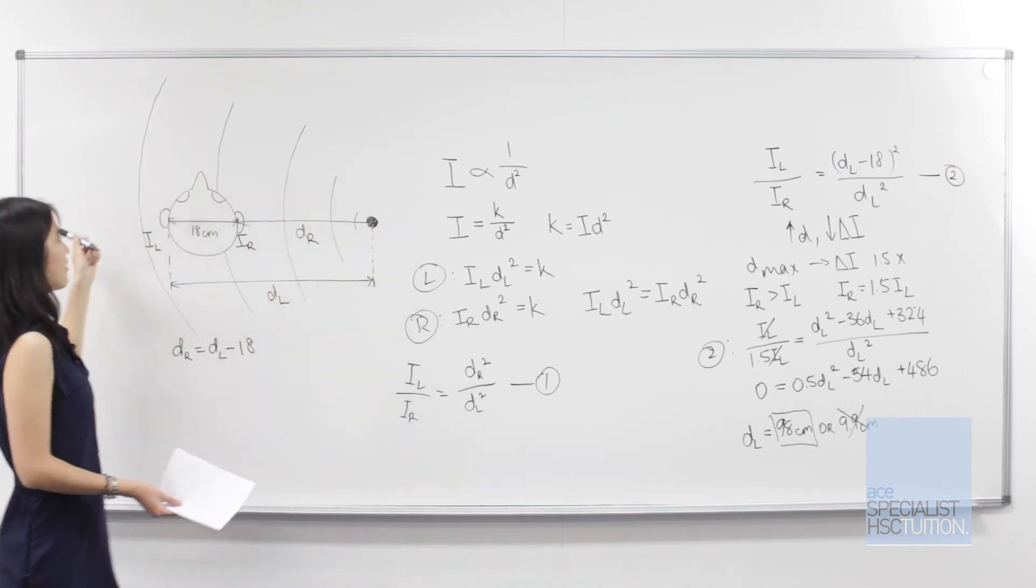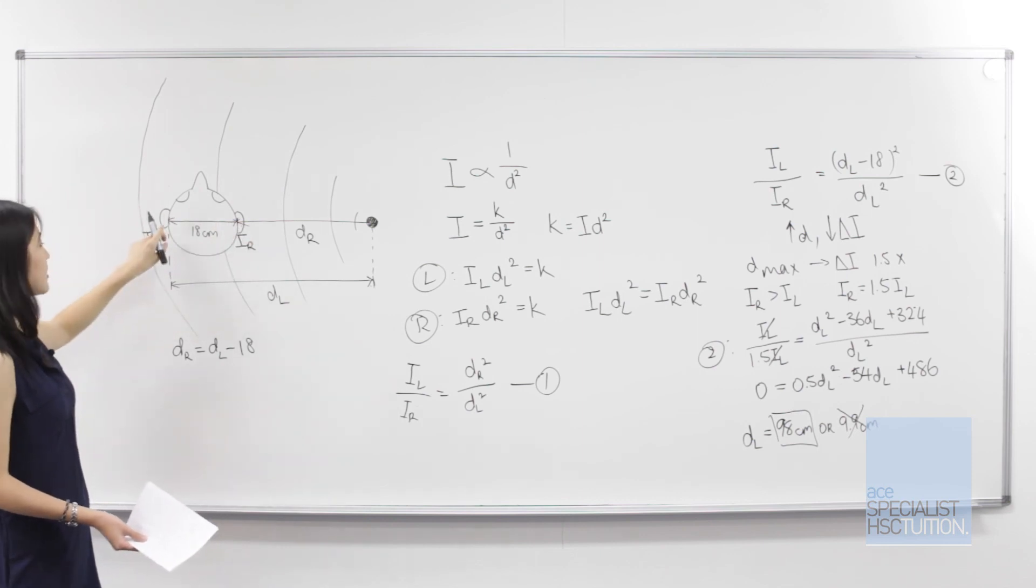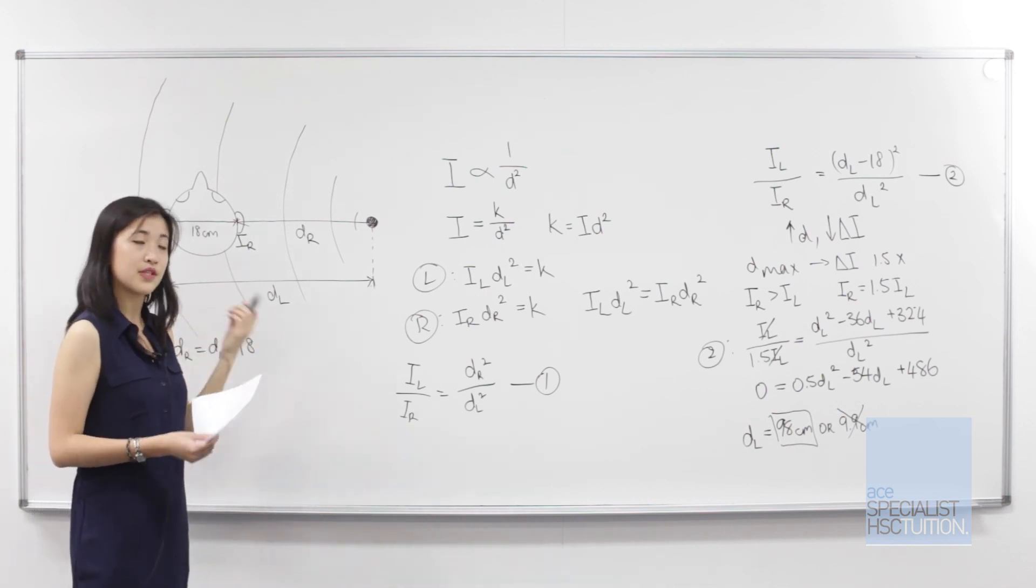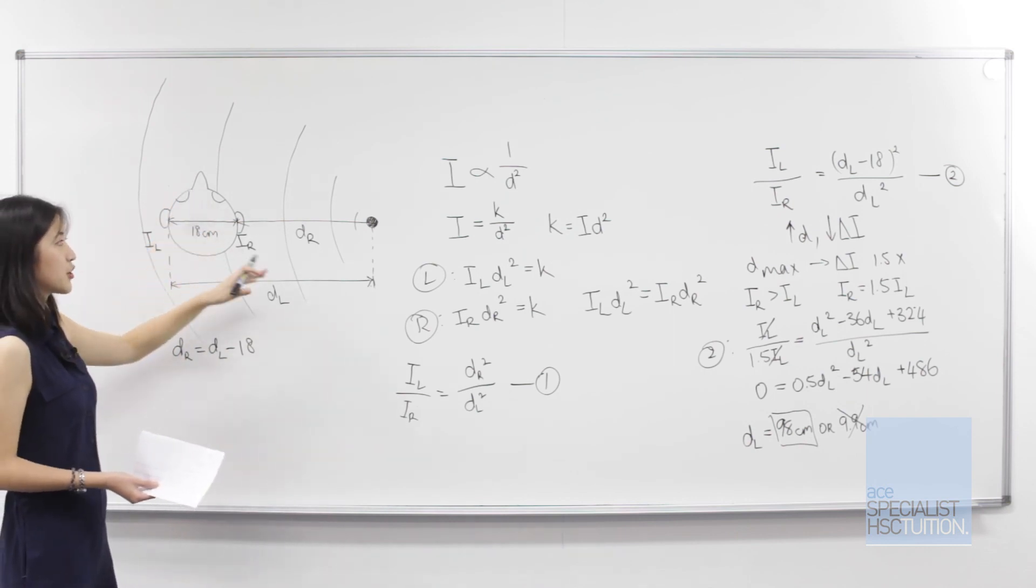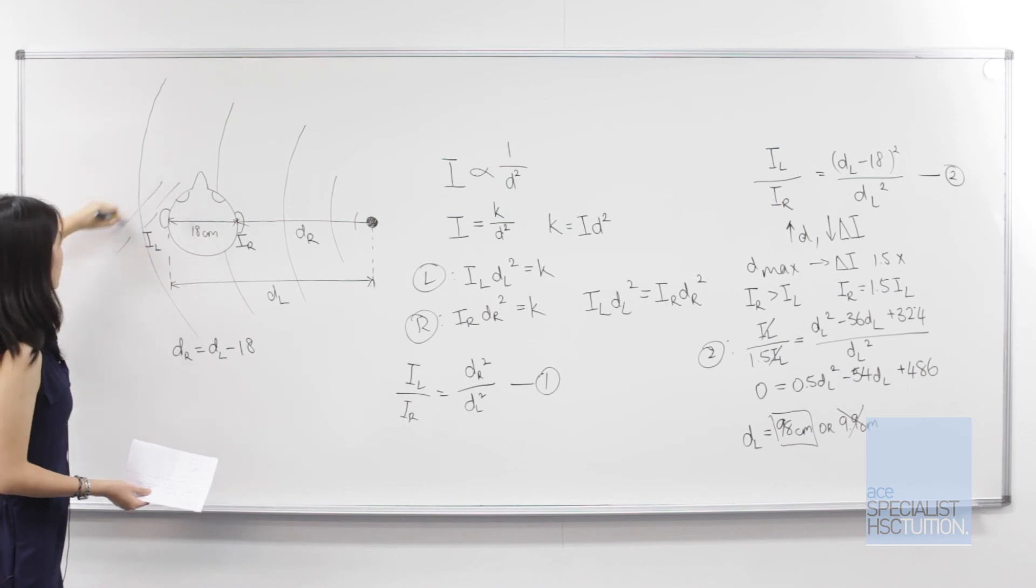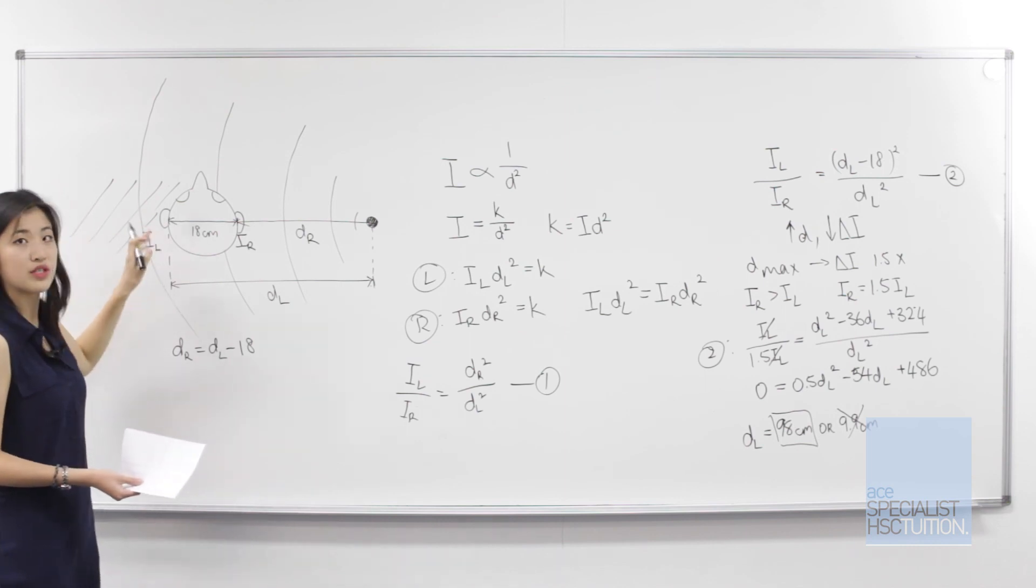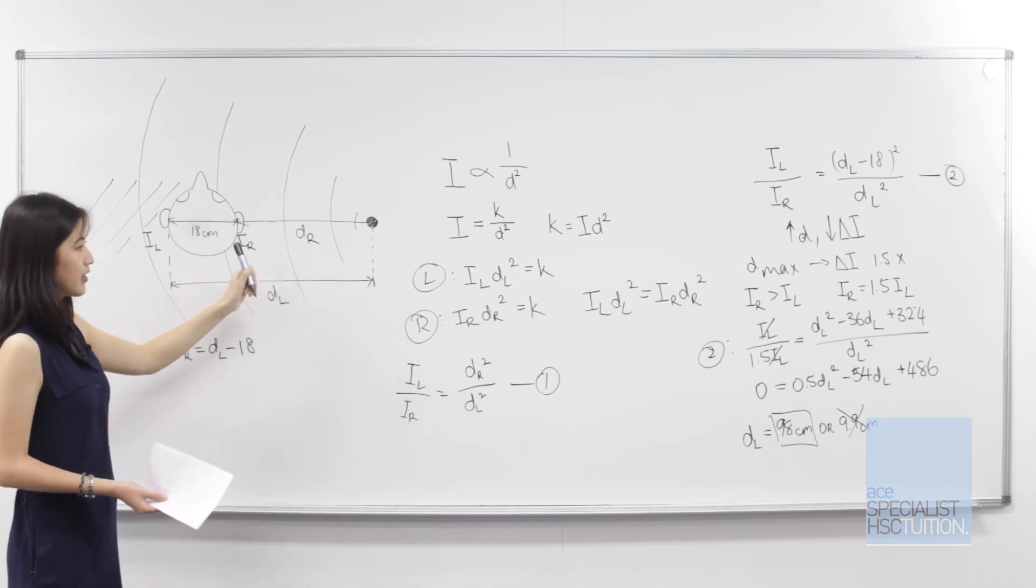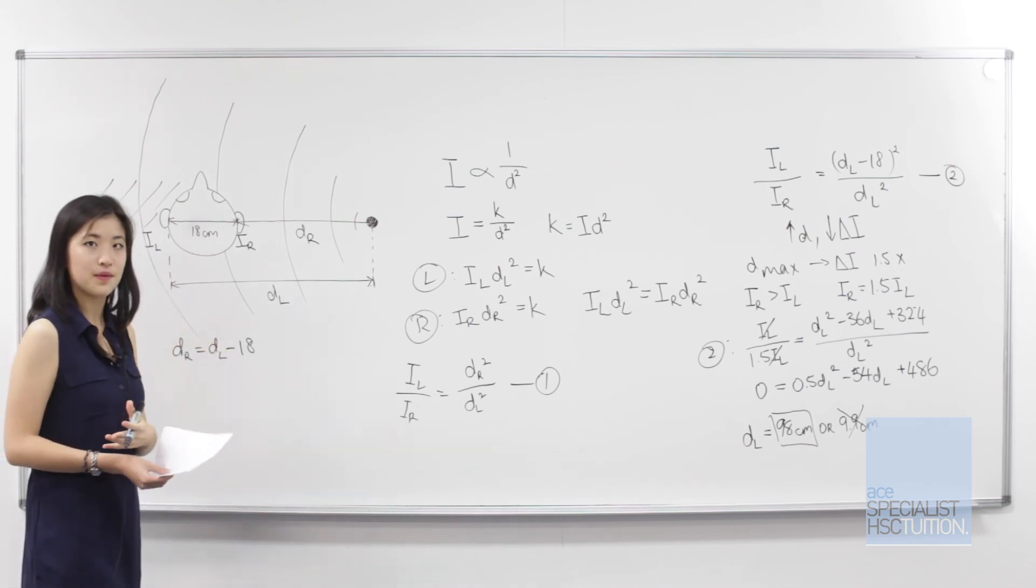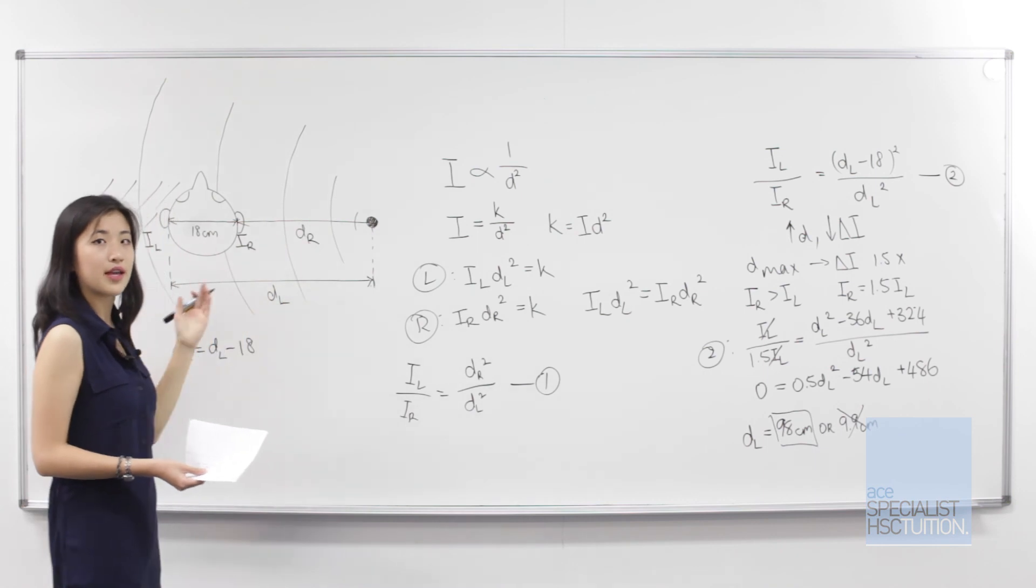If we had a sound source on the left, it can be placed a maximum distance of 98 centimeters from the right ear and 80 centimeters from the left ear. This question represents a simplified scenario where the head doesn't affect sound propagation. But in reality, solid objects like the head create what's known as an acoustic shadow that decreases or dampens the intensity at the more distant ear. So in reality, at this calculated distance of 80 centimeters, the intensity difference is actually greater than 1.5 times, meaning we can place the sound source slightly further away and still have the same magnitude of intensity difference.